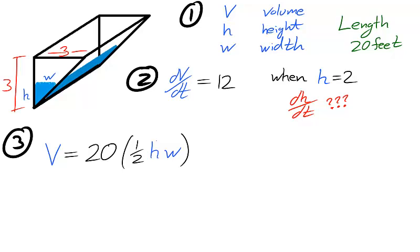We also have a similar triangle. The triangle of the water is similar to the larger triangle of the trough. We can use this similarity to find the relation w over 3 is equal to h over 3, or just w is equal to h.